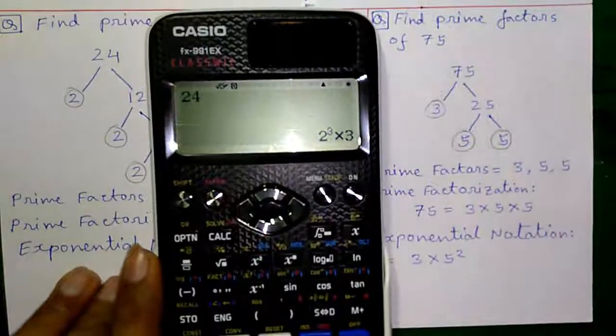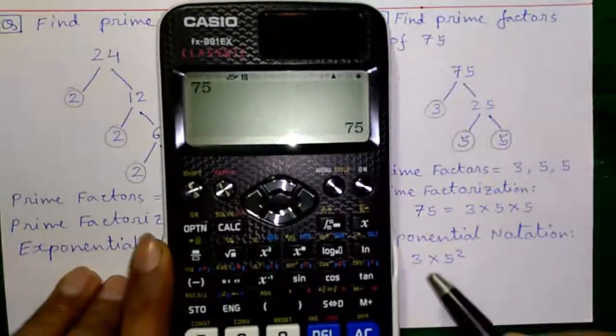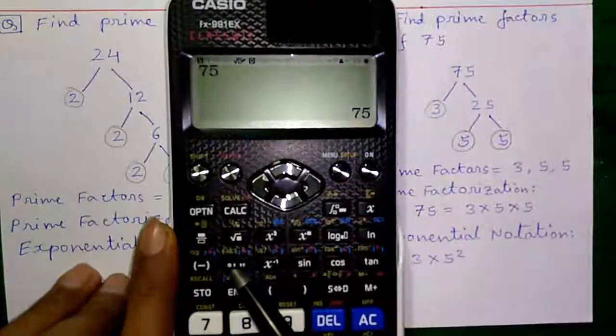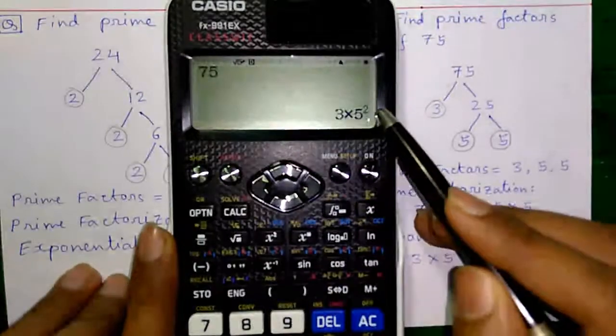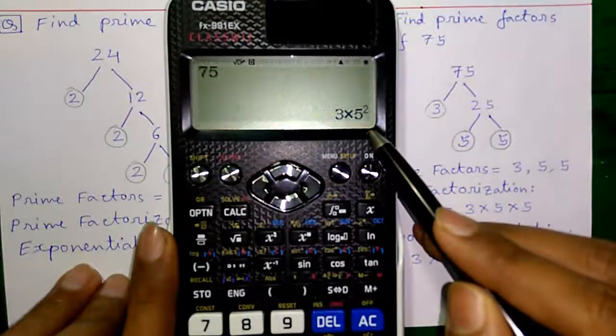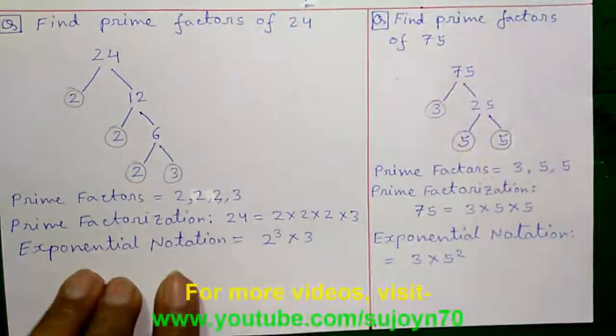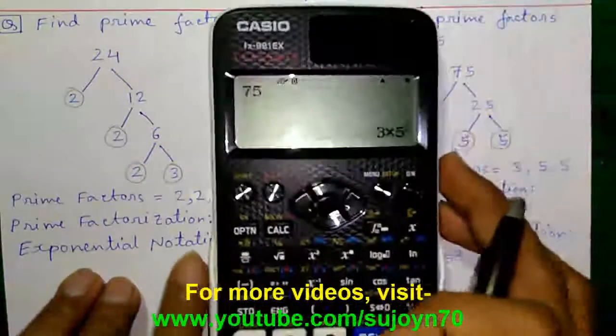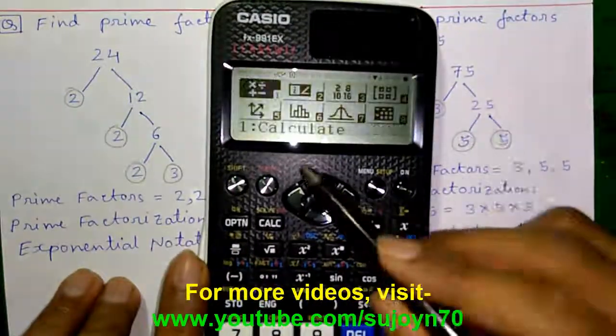Let's do it on calculator. Enter 75, press equals to, then press shift and this button. So it is 3 into 5 square or 3 into 5 into 5. I will make a series of videos on all the features of this calculator.